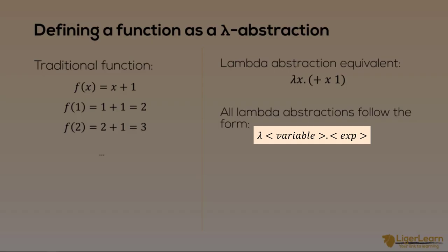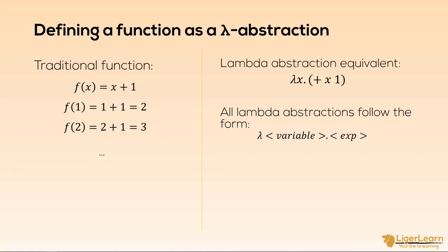In the lambda calculus, function application is always written in prefix form, so the plus is always before its arguments. It might seem a bit weird at first because we are taught to place the plus in an infix position in mathematics, but you will get used to it. All lambda abstractions have this form: the lambda character, the formal parameter (which we call variable for short), a dot, and then the expression representing the function. Unlike the traditional mathematical function f, the lambda abstraction does not have a name — it is said to be an anonymous function. In the lambda calculus, functions do not have names. They remain anonymous, though sometimes it might be convenient to give a function a name.